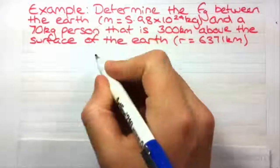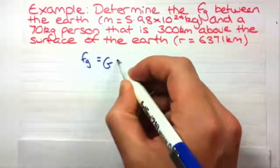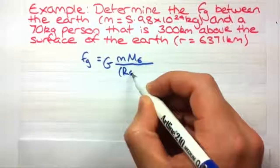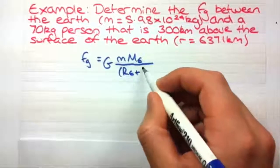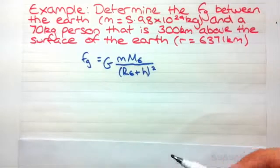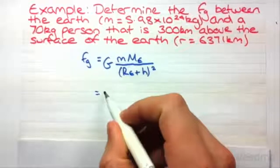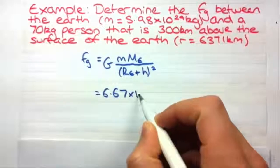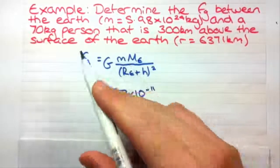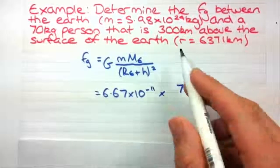So what we're going to do first is write down our formula that we've just learnt. And we're going to use that RE plus H squared formula. Because he's not on the Earth's surface, he's above the Earth's surface. Right, now we can just sub in all the values we know. So this one's 6.67 times 10 to the minus 11. By the way, you won't have to remember that, that'll be given to you. The mass of the person is 70 kilograms times the mass of the Earth.